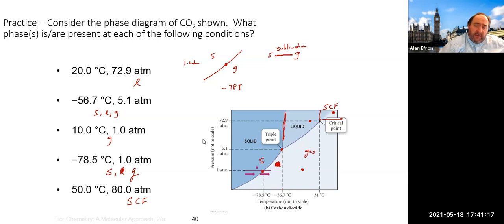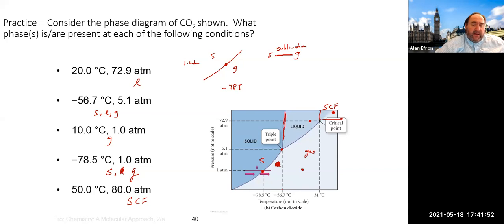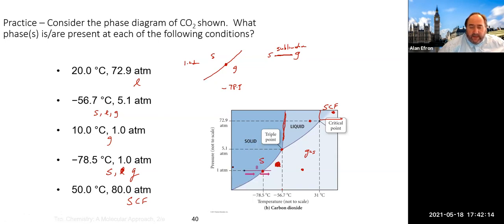That transitions us into phase diagrams, which help us understand the relationship for different substances in terms of pressure and temperature. On the phase diagram shown here for carbon dioxide — which is dry ice — there are several important points. Going left to right there is the solid, liquid, and gas arrangement. Lines separate those regions, and those are where transitions occur. Going from solid to liquid follows the line between those regions, where melting and freezing occur. At one atmosphere, carbon dioxide goes directly from solid to gas.